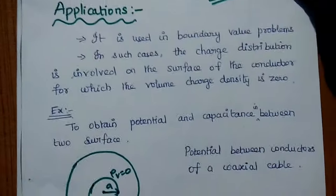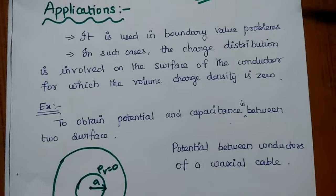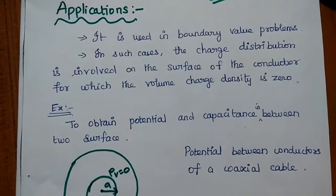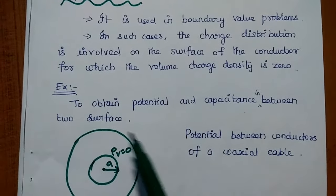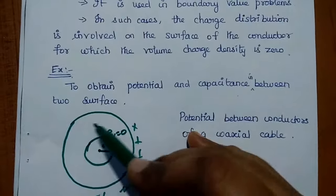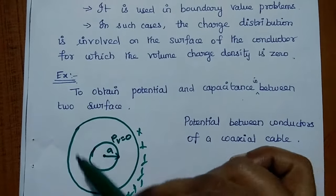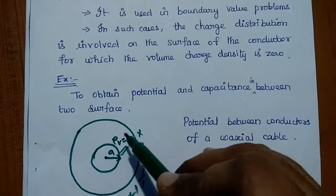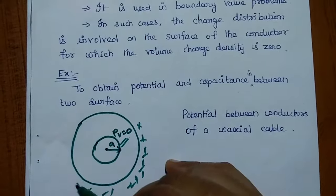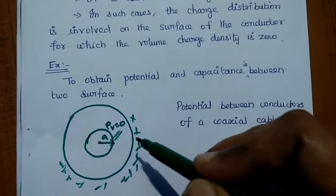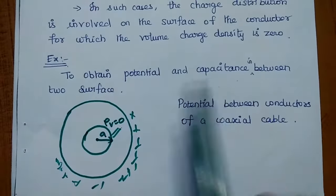The applications of the Laplace equation include boundary value problems, where the charge distribution is involved on the surface of a conductor for which the volume charge density is zero. The charge distribution is only on the surface, not inside. This is a closed volume where there is no charge density inside; charge exists only on the surface. In such cases, we use the Laplace equation to obtain potential and capacitance between two surfaces.